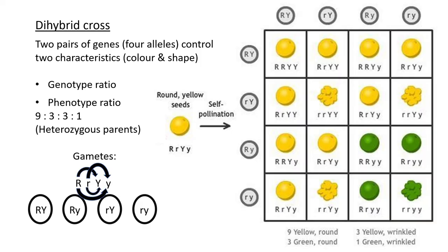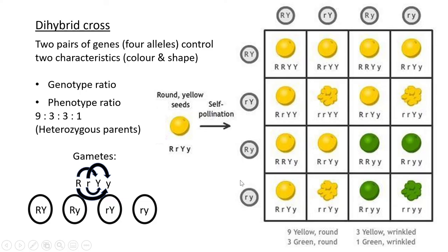For a dihybrid cross, it's a bit more complicated, but usually in exams they give you the entire Punnett square and ask short questions, or just short questions without the full cross. The key difference is that a dihybrid cross involves two pairs of genes - four alleles controlling two characteristics. For pea plants, those two characteristics are color and shape. The Punnett square will have 16 blocks representing all possible allele combinations.